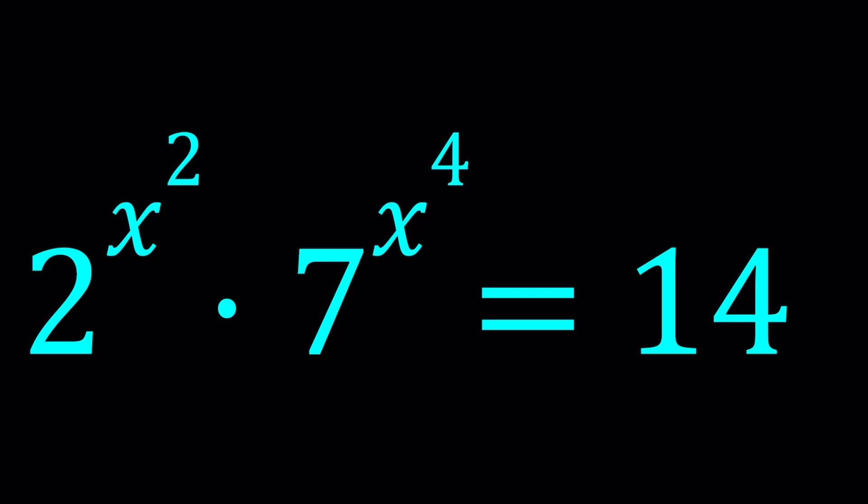So we have 2 to the power x squared times 7 to the power x to the fourth equals 14. We're going to be solving for x values, real and complex. Do you think there are any real solutions? Do you think there are any complex solutions at this point? Jot down your guesses and let's get started.